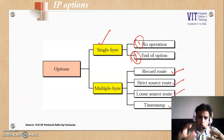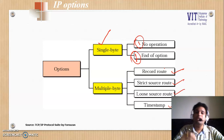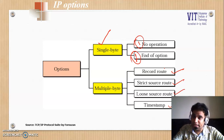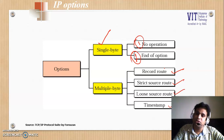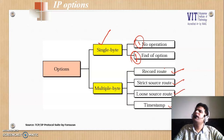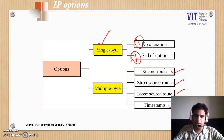The looser version is called Loose Source Route. It requires the packet to visit the mentioned routers — R1, R2, and R3 — but it is still okay if the packet visits some extra routers along the way.